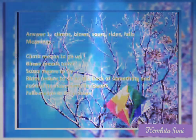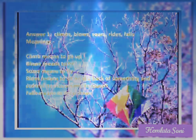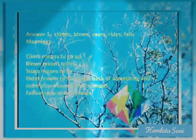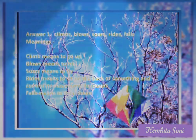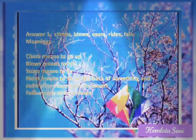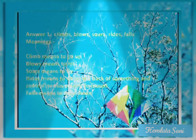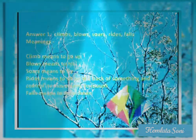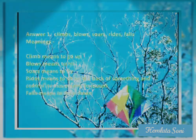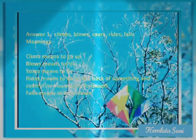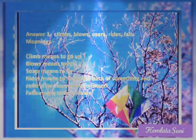So here are the answers. The action words of the kite are: climbs, blows, soars, rides, falls. Their meanings are: climb means to go up, blows means to hit, soars means to fly high, rides means to sit on the back of something and control its movement, falls means to drop down.